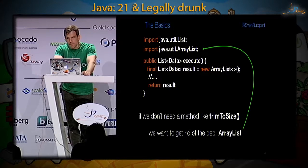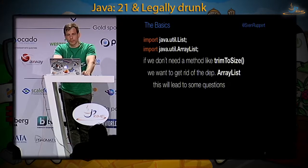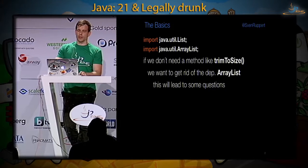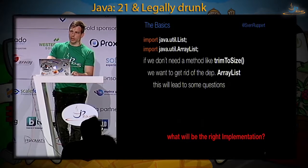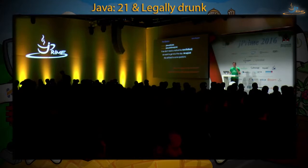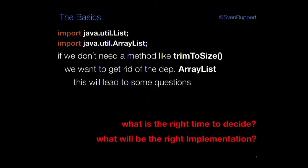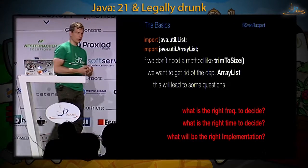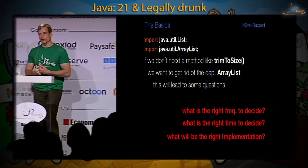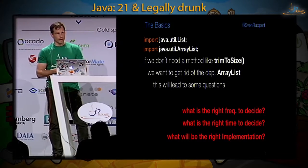This will lead to some questions. The main question that a dependency injection framework will try to give you an answer to is: what will be the right implementation? But if you are thinking about this, the next one will be: what's the right time to decide? And the third question would be: how often you could decide — what's the right frequency? And the dependency injection framework will give you help with all three questions.